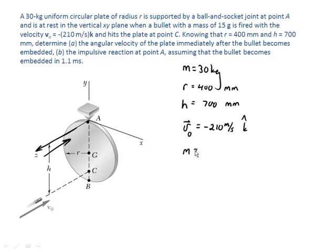We also know the mass of the bullet is 15 grams, which is 0.015 kilograms. What we're looking for is the angular velocity of the plate immediately after the bullet becomes embedded.